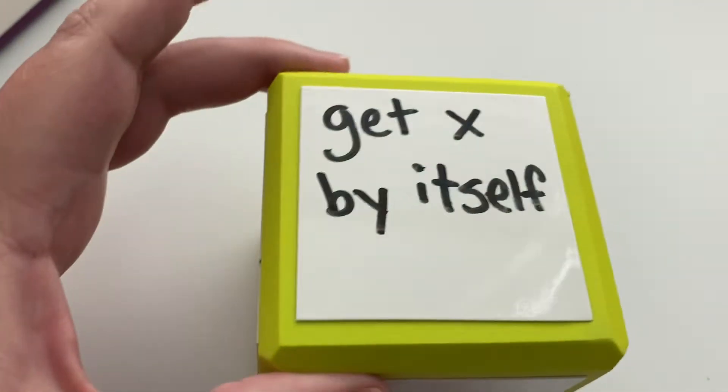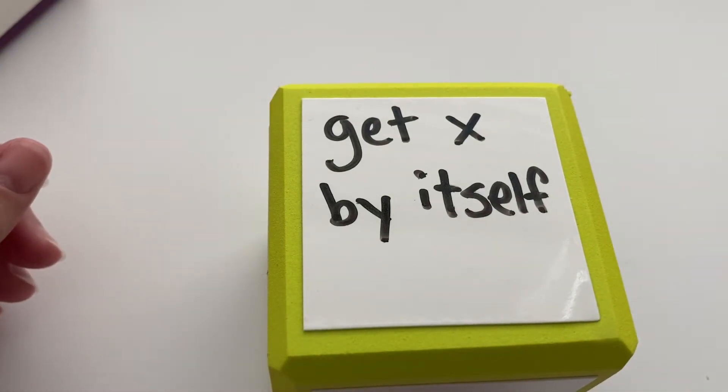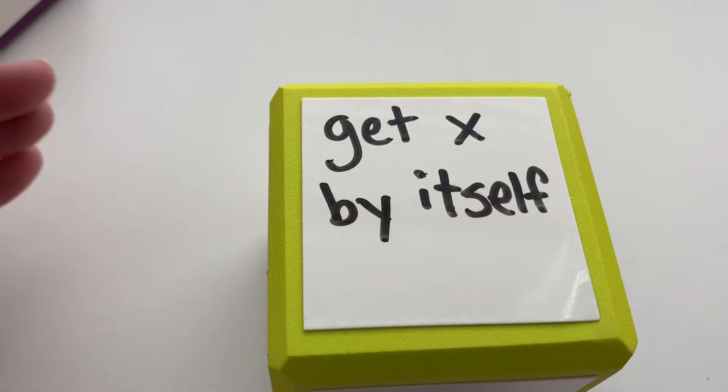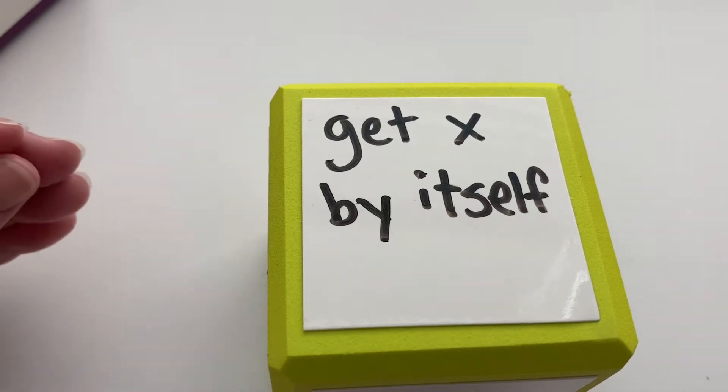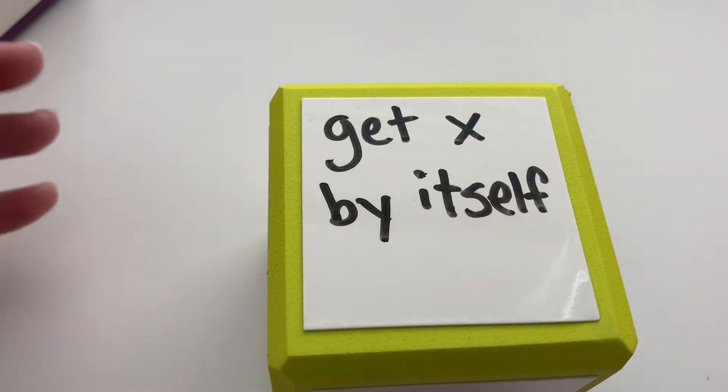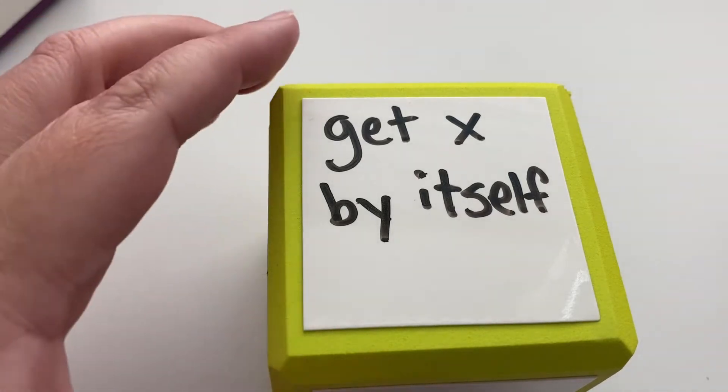We try to get x by itself and it's like a puzzle. There are some things that we can do to keep the two sides of the equation equal but at the same time remove things from one side because their value or their operation and value is going to go to the other side.